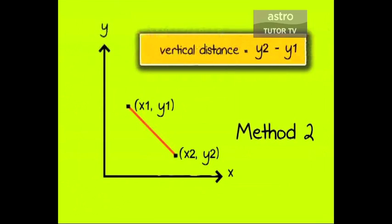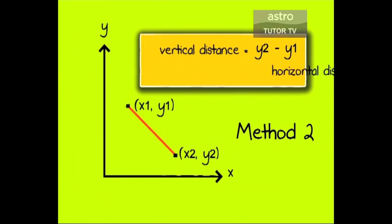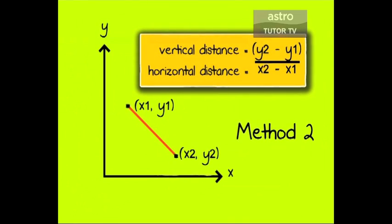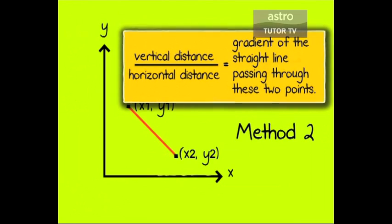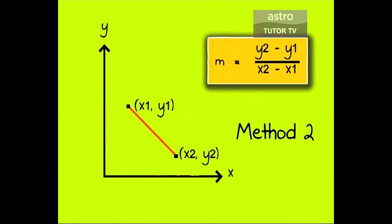The vertical distance between the two points is y2 minus y1 and the horizontal distance between the two points is x2 minus x1. Divide the vertical distance y2 minus y1 by the horizontal distance x2 minus x1. Vertical distance divided by horizontal distance equals the gradient of the straight line passing through these two points. Gradient m equals y2 minus y1 divided by x2 minus x1.